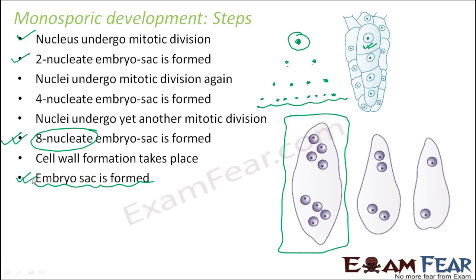Until the cell wall is formed, division keeps happening — from 2 to 4, 4 to 8, 8 to 16, and so on. Once cell wall formation has happened, it is now an eight-nucleate embryo sac, and that is how the embryo sac is formed. This process is known as monosporic development, because this eight-nucleate embryo sac was formed from a single megaspore.